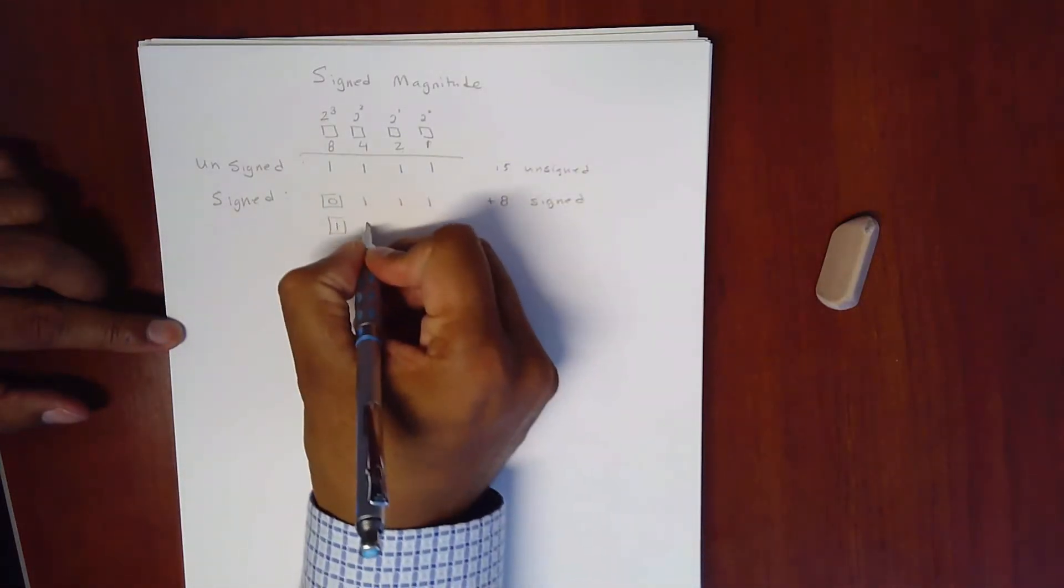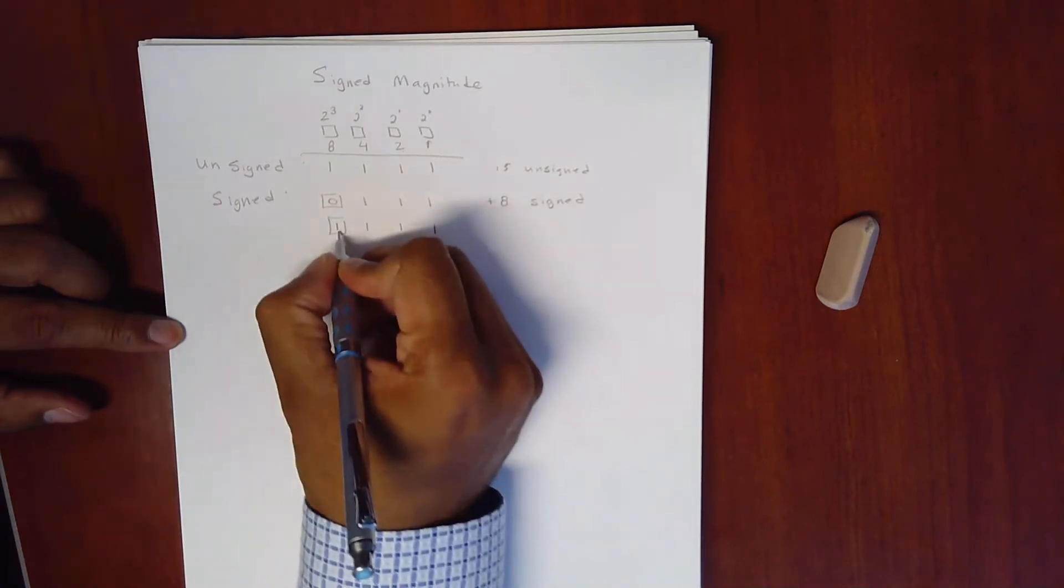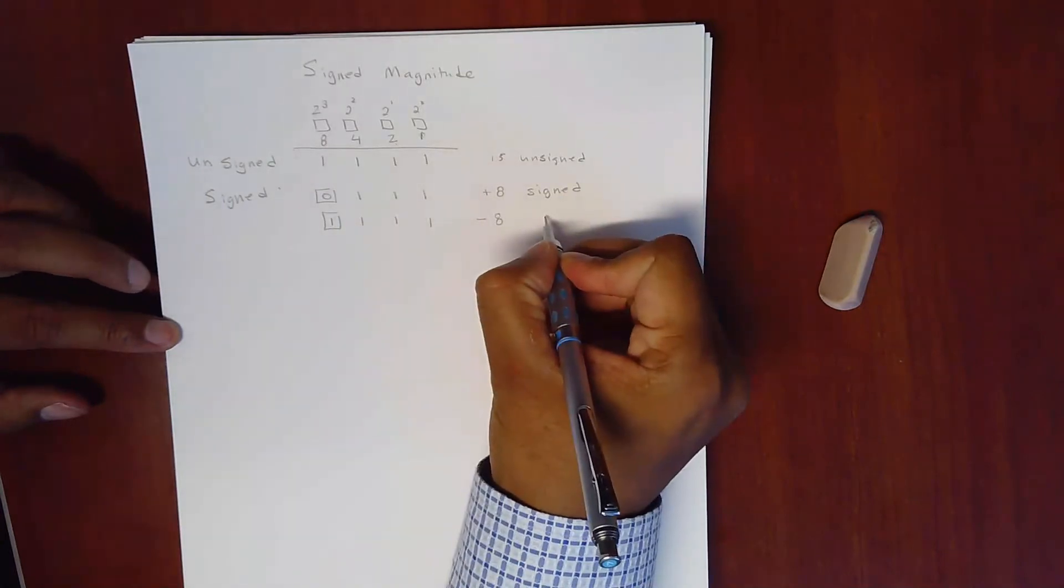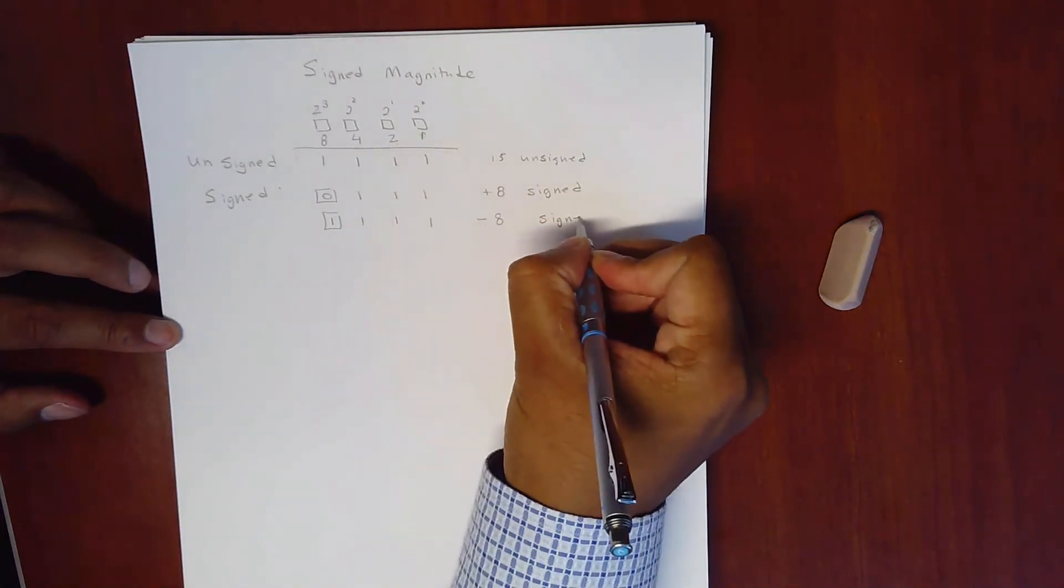Minus 8 is 1, 1, 1, 1, but this first number now designates a negative. So this is minus 8 signed.